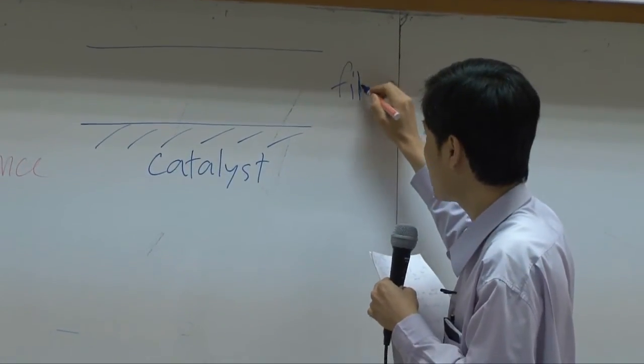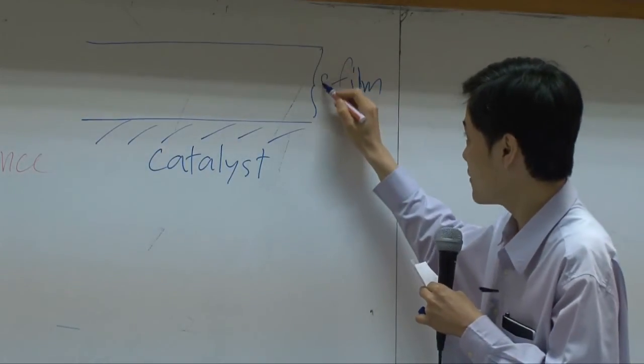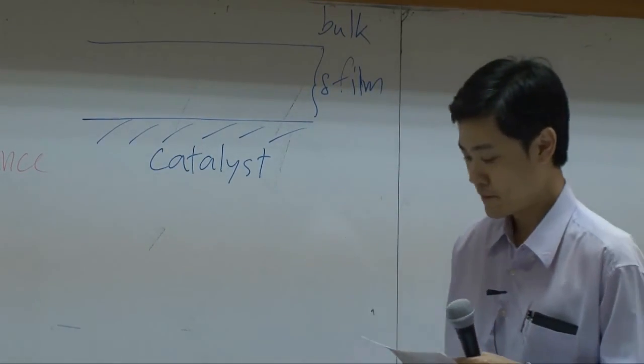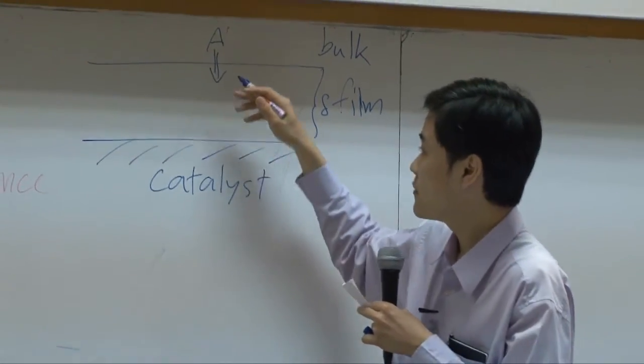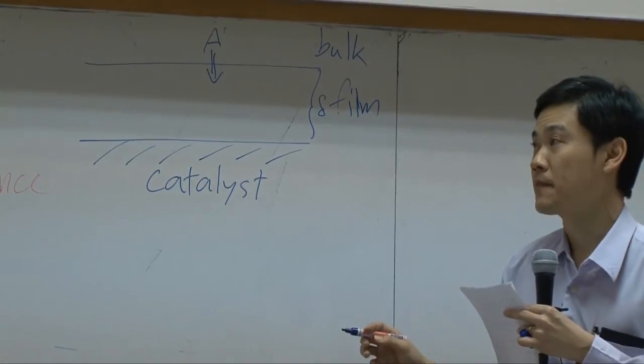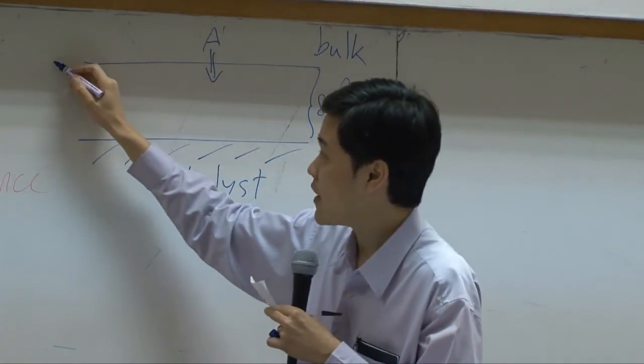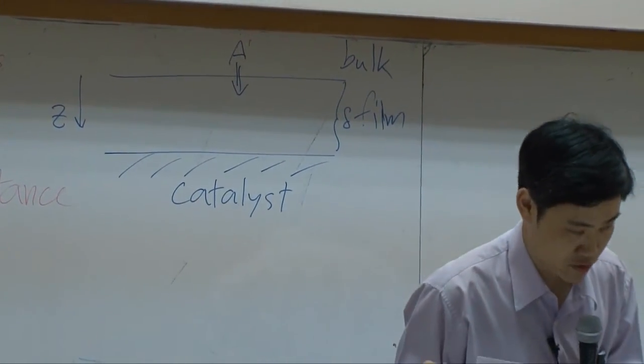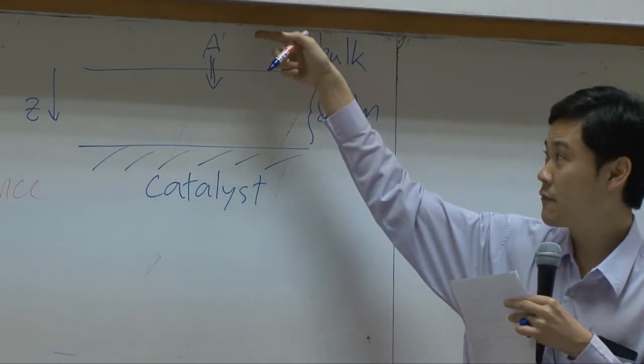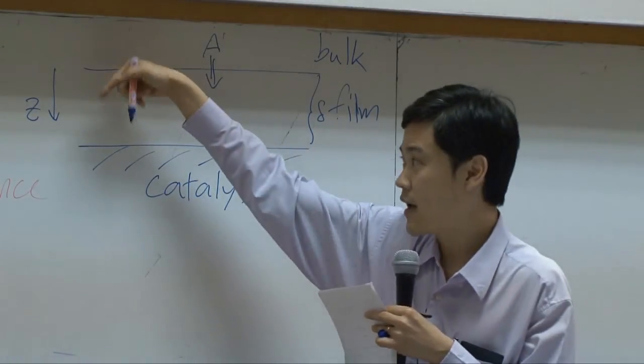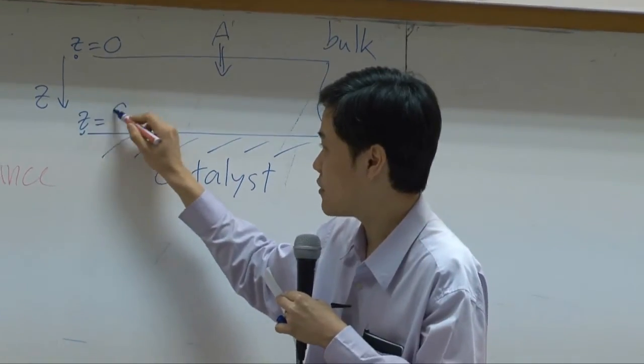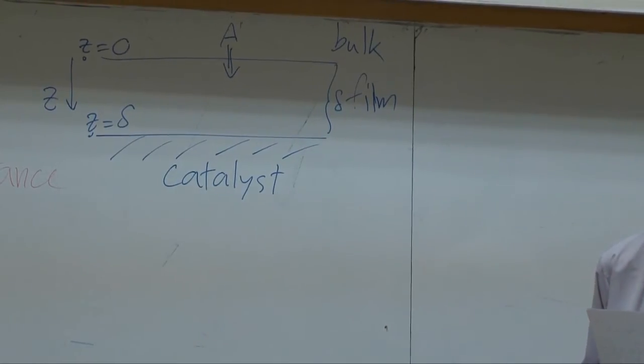So here will be our film resistance. Suppose the thickness here is delta. Out here is bulk. So you have A diffused from bulk, which has high concentration, down to the surface of catalyst, which has low concentration. Now in this direction, if I say this direction is Z - remember, normally we take direction to be at least we will take direction to be along with our diffusion flux. And we know right now that flux of A moves downward. So direction downward can be taken to be Z direction. So at this position here is Z equal to zero. This position will be Z equal to delta.